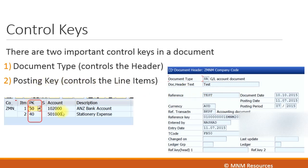The posting key controls the line item. As seen in the earlier screen, the two line items each have their own posting key. The common posting key for debits for a GL account is 40, and for credits it's 50. The posting key controls the line item and, within each line item, specifies which fields are hidden, optional, required, or display only. So there are two control keys in a document: the document type which controls the header, and the posting key which controls the line items.